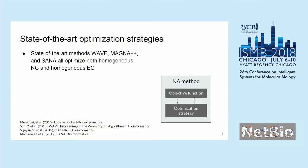Recalling that network alignment methods have an objective function and an optimization strategy — those I previously described were the objective functions, and now the optimization strategies. We use WAVE, Magnet++, and SANA. A prior study compared WAVE and Magnet++ to many other methods and showed they performed the best. Since then, SANA appeared, so at the time of our study, these were the best methods available to us, and we use these as our optimization strategies.